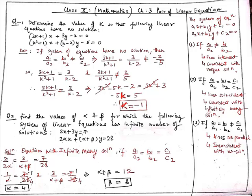Our first question for today is: determine the value of k so that the following linear equations have no solution. Our linear equations in two variables are: (3k + 1)x + 3y − 2 = 0, and (k² + 1)x + (k − 2)y − 5 = 0.